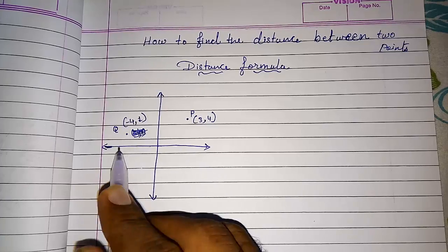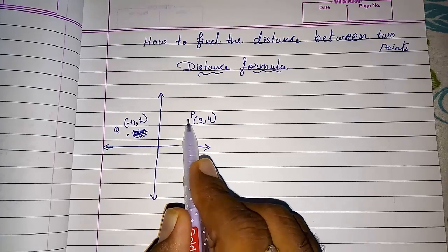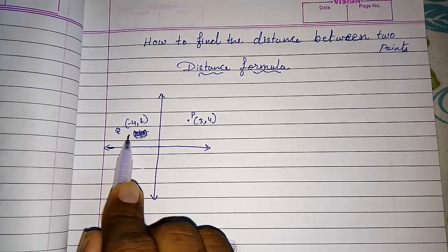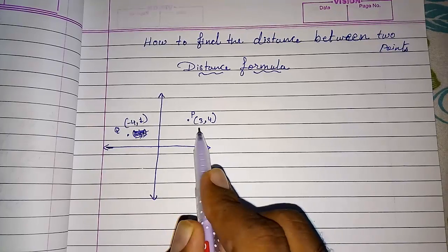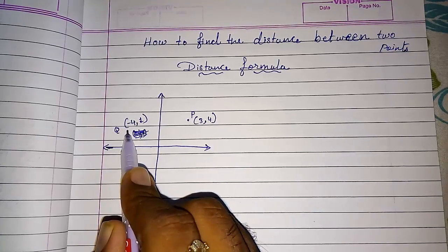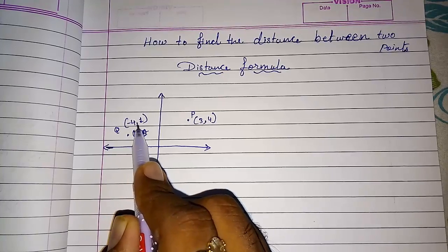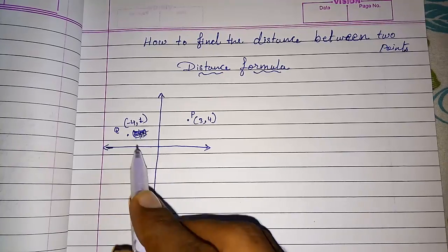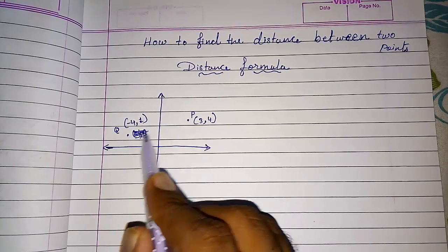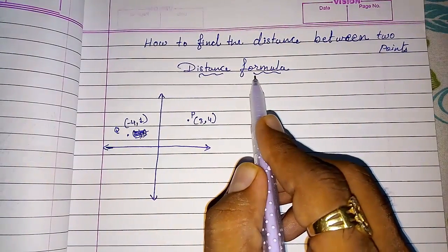Here, look here. This is a Cartesian plane and I have drawn two points. One point is P, one point is Q, and the coordinates of P are (3,4) and the coordinates of Q is (-4,1). So we can find the distance between these two coordinates with a formula called the distance formula.